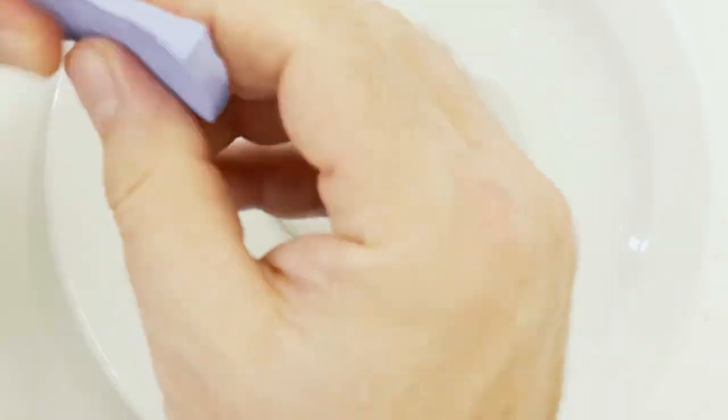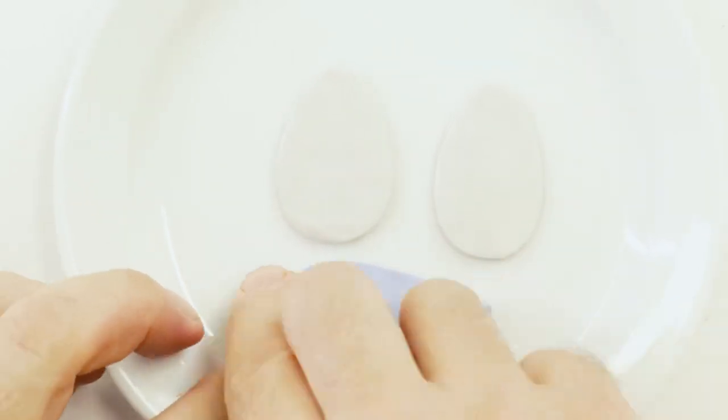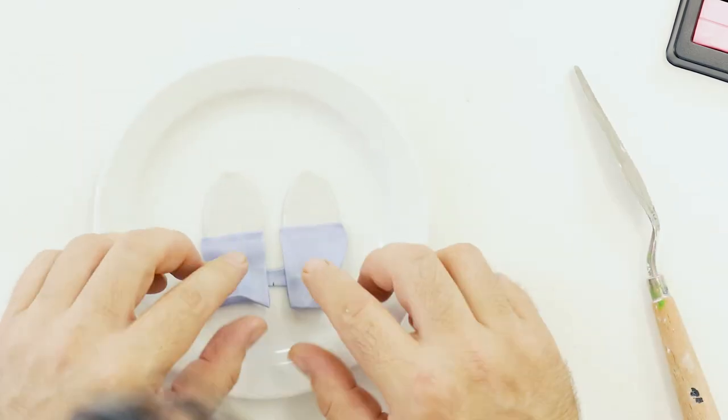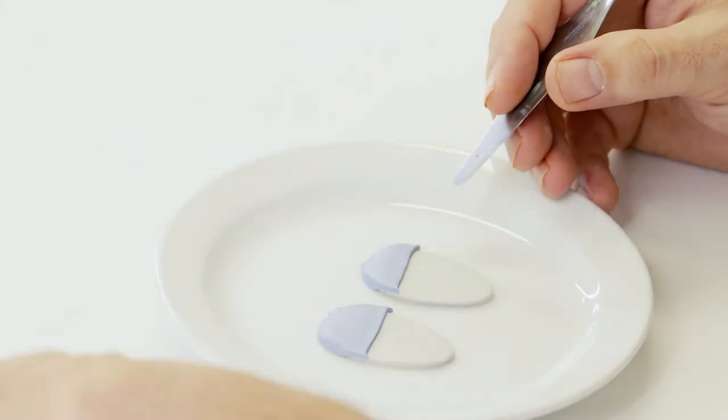We can then take out some metallic blue and roll this flat. Then cut a straight edge and remove the waste. Then lay this sheet approximately a third of the way up the eggs.